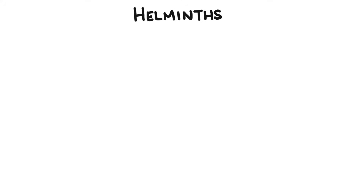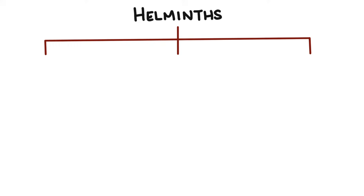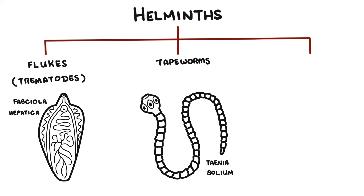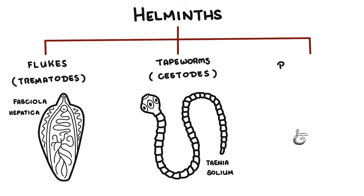Helminths are classified into three types: flukes, called trematodes; tapeworms, called cestodes; and roundworms, called nematodes. Flukes and tapeworms are also known as flatworms — both of these helminths are very flat.